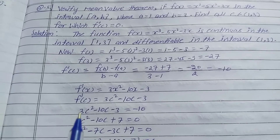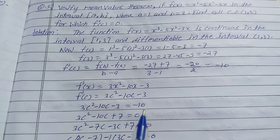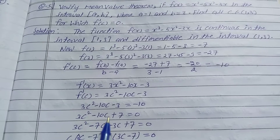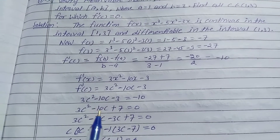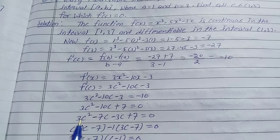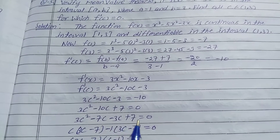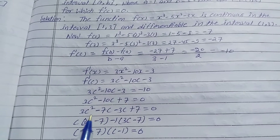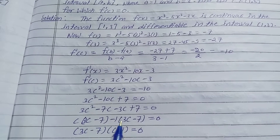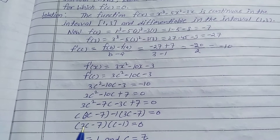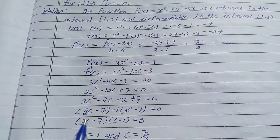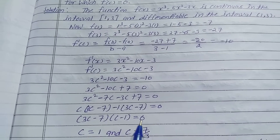Compare f'(c) to the found value: 3c² - 10c - 3 = -10. Transfer -10 to this side: 3c² - 10c + 7 = 0. Split the middle term as -7c and -3c: 3c² - 7c - 3c + 7 = 0. Taking common factors: c(3c - 7) - 1(3c - 7) = 0, giving (3c - 7)(c - 1) = 0.